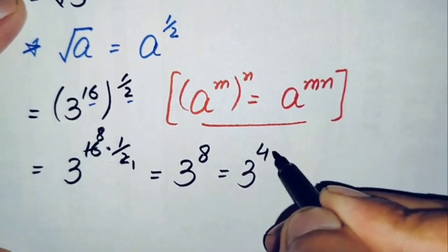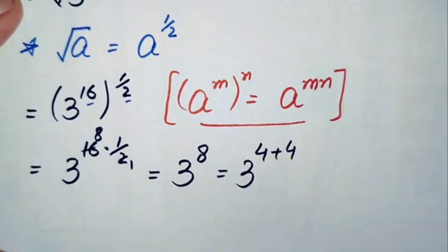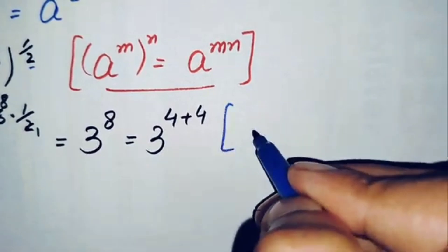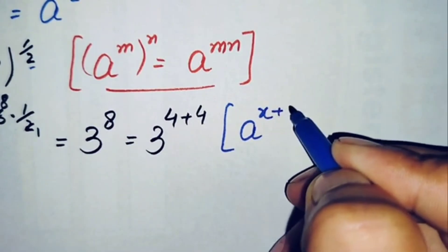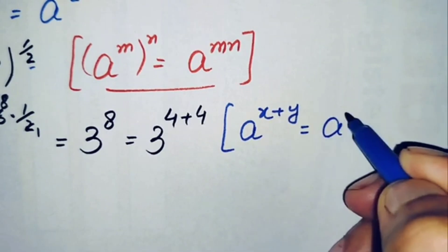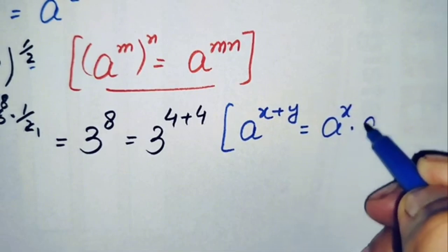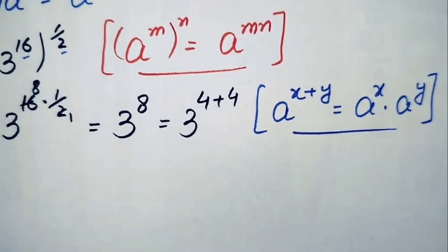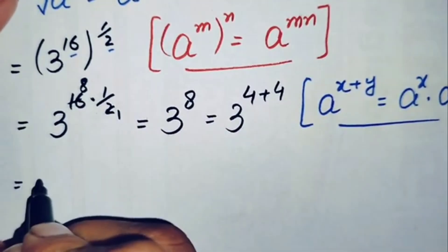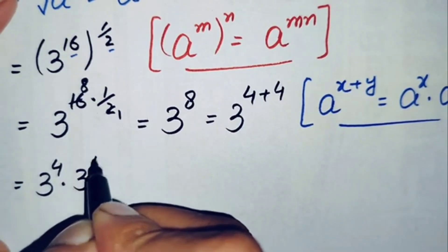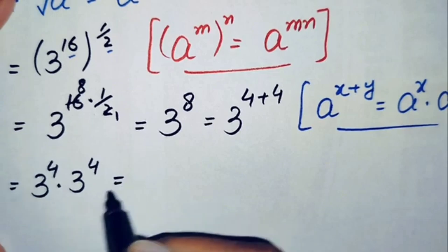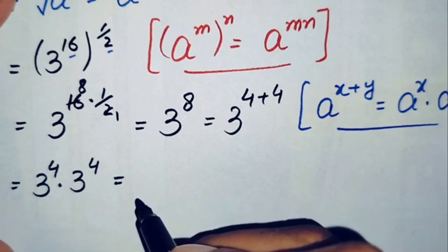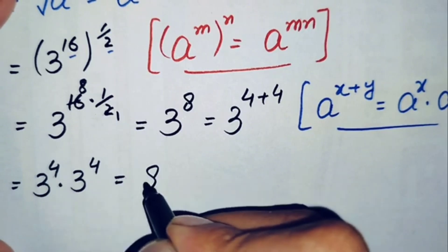We can write 3 raised to power 8 by splitting the exponent as 4 plus 4. Using the exponential property that a raised to power (x + y) equals a raised to power x times a raised to power y, this becomes 3 raised to power 4 times 3 raised to power 4. The value of 3 raised to power 4 is 3 × 3 × 3 × 3 = 81. So we get 81 times 81.